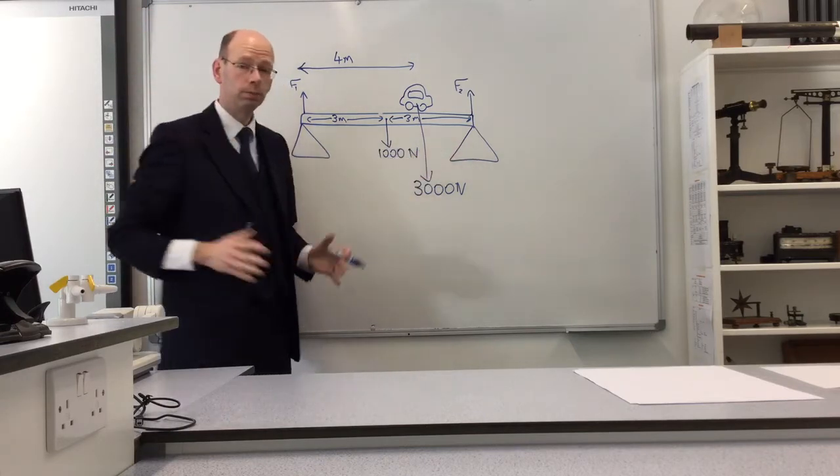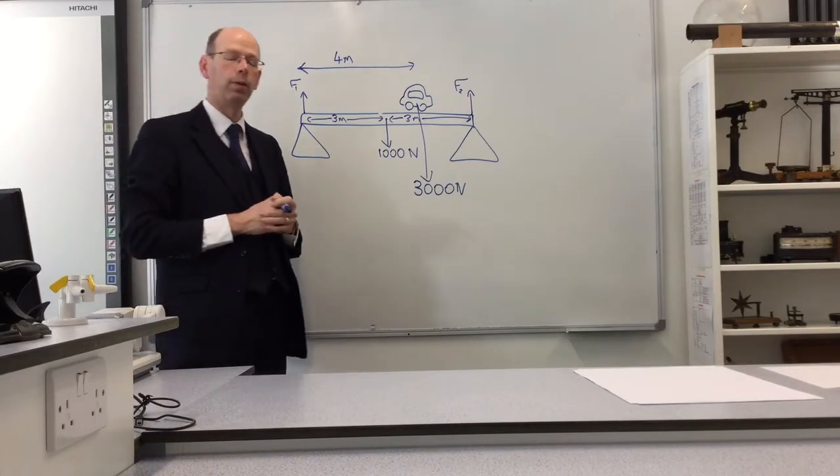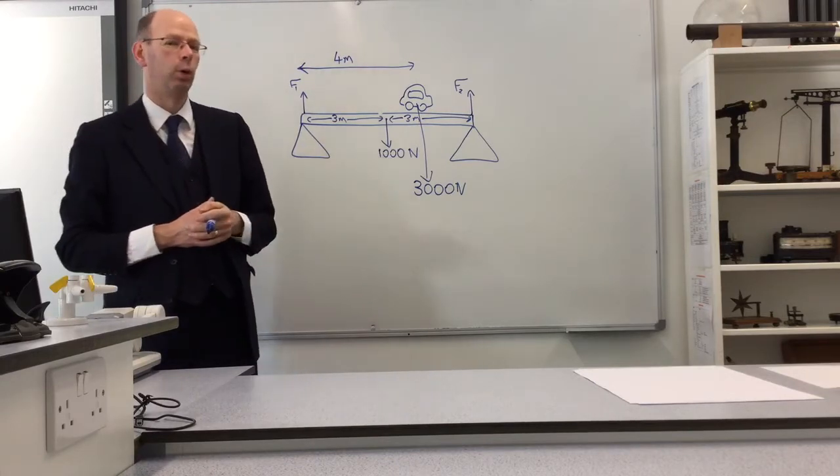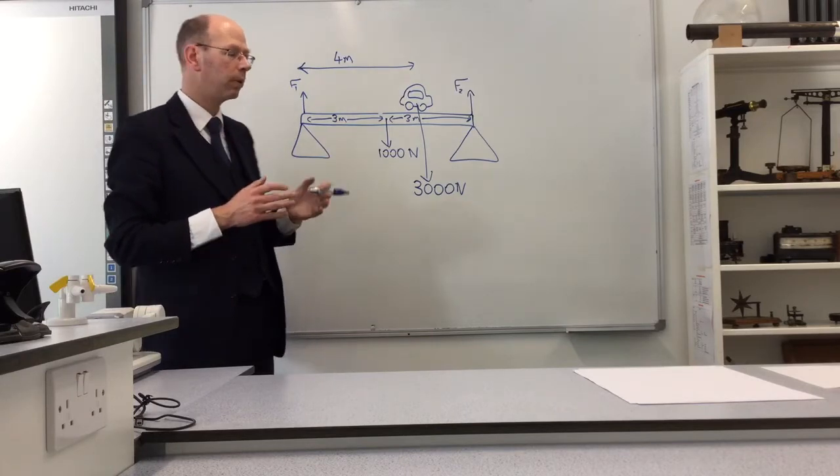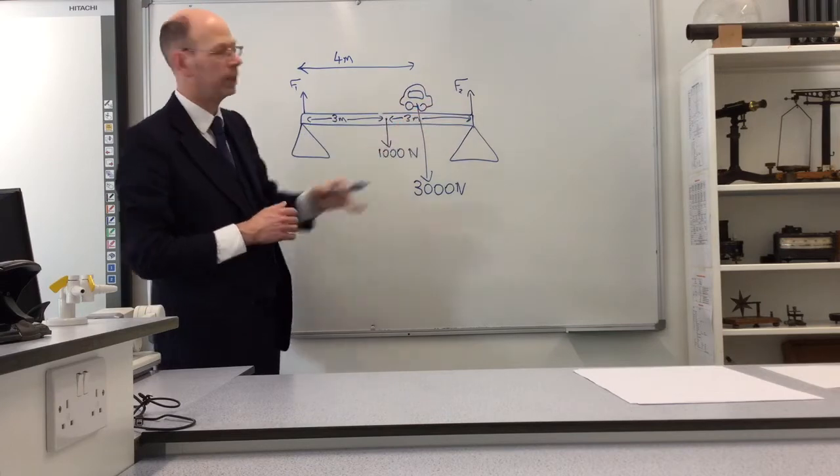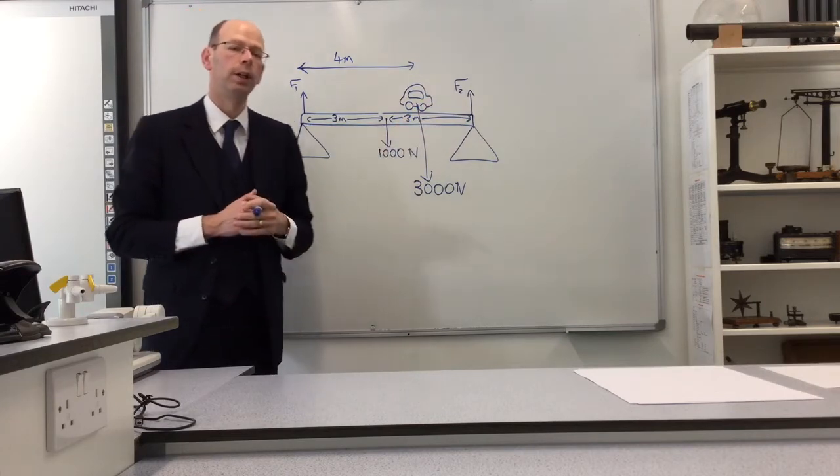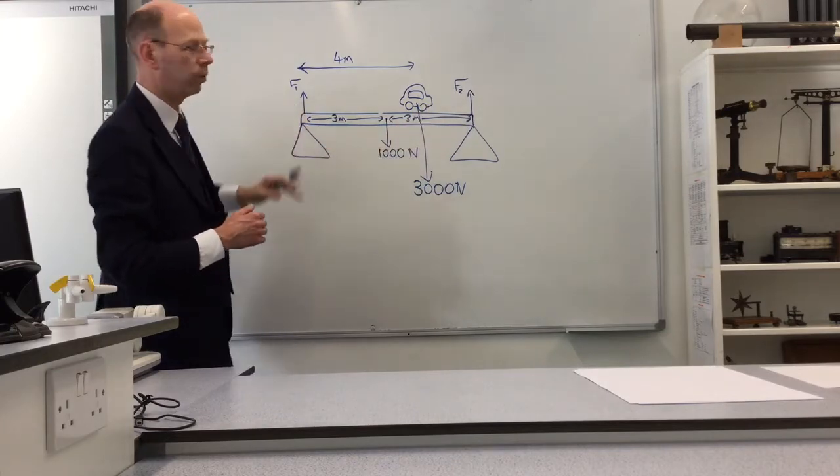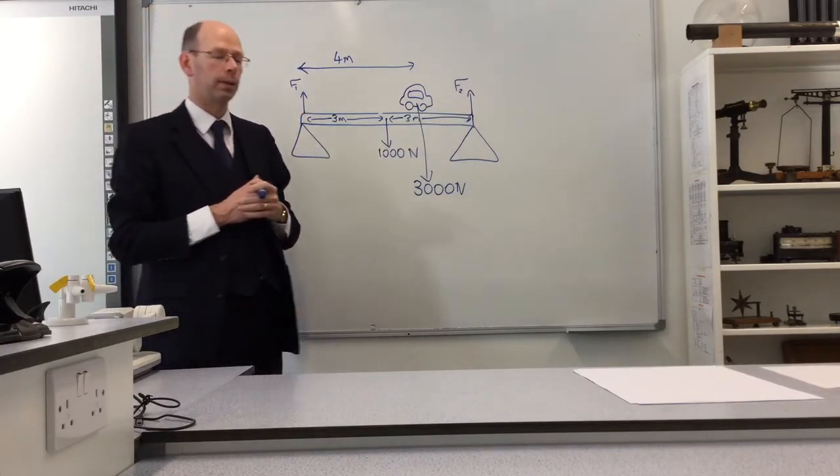Now we've got a total force downwards of 4000. So F1 and F2, to balance it, they're going to have to add up to 4000 as well. But are they going to be the same or not? It was alright when it was symmetrical, but now we've got a car, the car's over this side of the bridge. What's that going to do to the size of the two forces? Is it going to make this one bigger, or this one bigger? Well, we'll have to work it out.